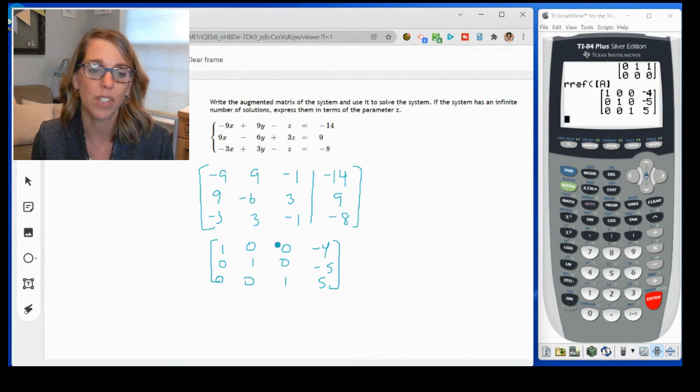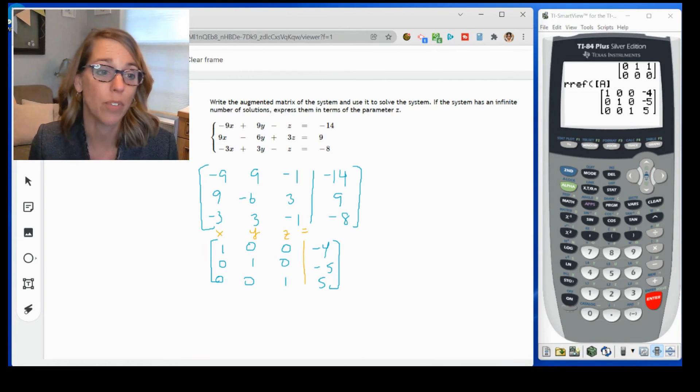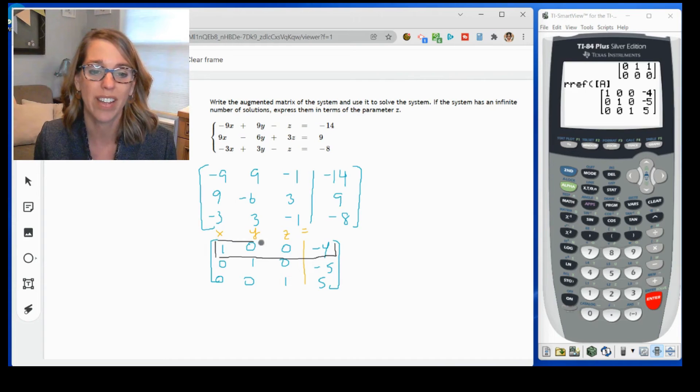These still represent the same coefficients. So the first column are the x, the second column, the y, the third column, the z, and then that last column is separated by the equal sign. So if I want to put these in terms of my answers, I can go ahead and grab this first row. And this tells me that 1x or x is equal to negative 4. It's giving me the answers. Super nice.